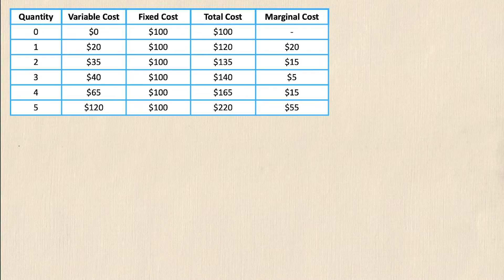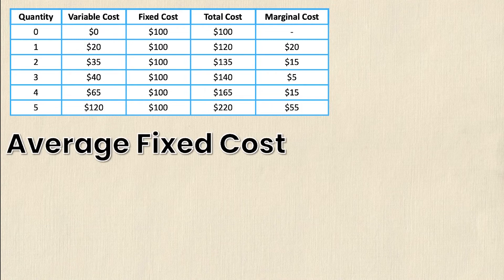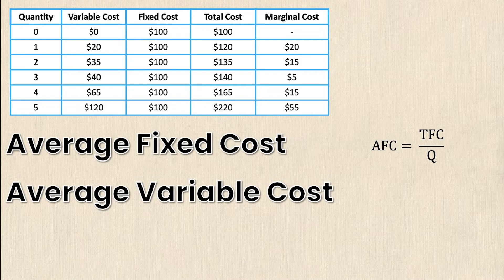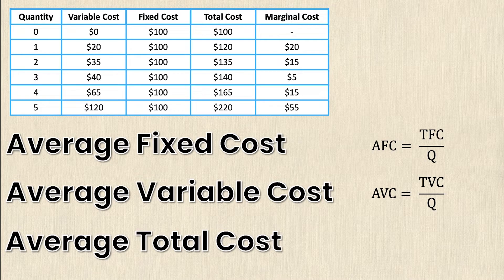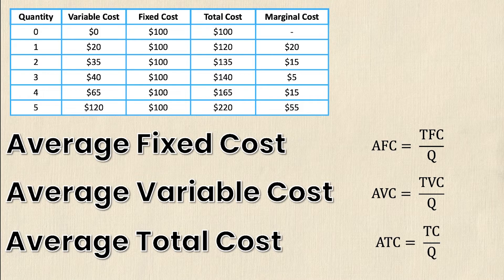Now we'll look at the averages, or per unit amounts, of variable, fixed, and total costs. The average fixed cost (AFC) is simply total fixed cost divided by quantity. The average variable cost (AVC) is total variable cost divided by quantity. The average total cost (ATC) is total cost divided by quantity. However, you can also just add AFC plus AVC to get ATC, so either method works to calculate that particular cost.